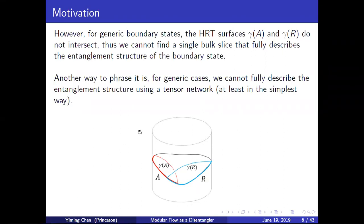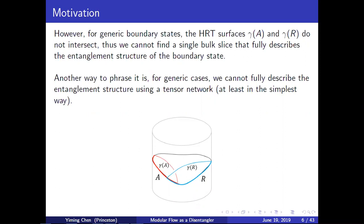However, in general cases — for generic boundary states or time-dependent bulk geometry — the HRT surfaces γ_A and γ_R do not intersect each other. As a consequence, we cannot find a single bulk slice that fully describes the entanglement structure of the boundary state. For a boundary state not defined on a constant time slice, choosing two overlapping regions A and R will in general yield HRT surfaces that do not intersect, so we cannot find a bulk slice containing both surfaces.